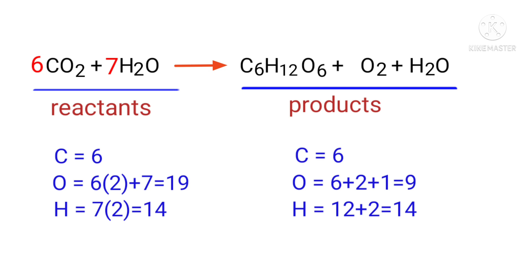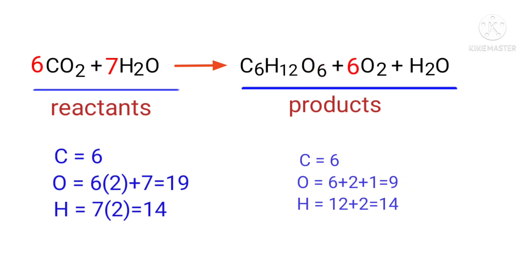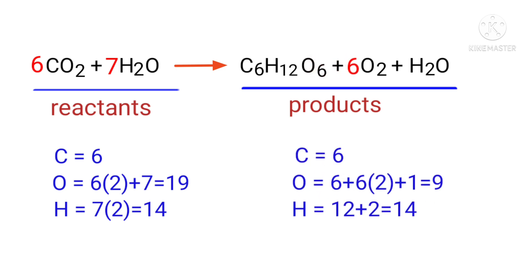Now we need to balance the oxygen atoms. To do this we need to put a coefficient of 6 in front of O₂. The equation is now balanced.